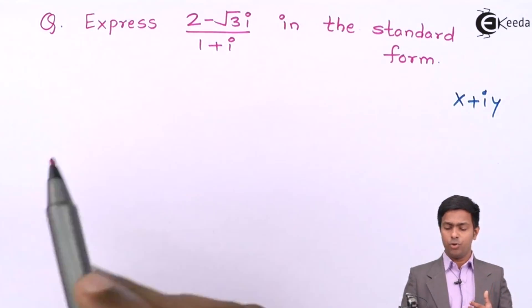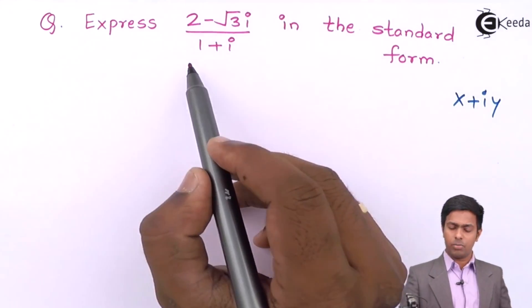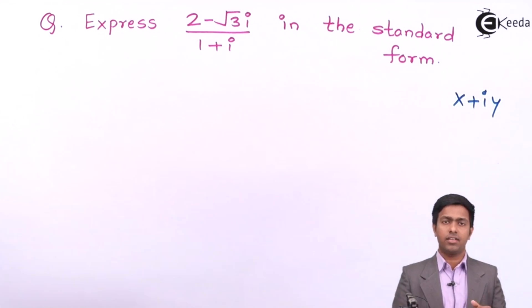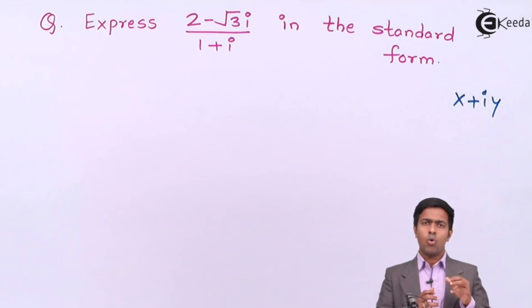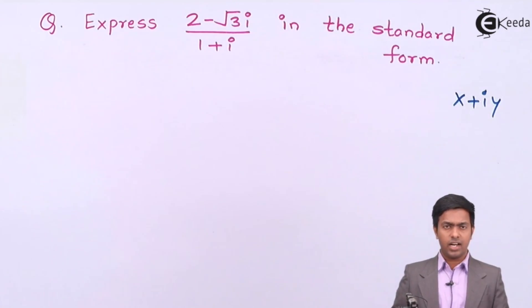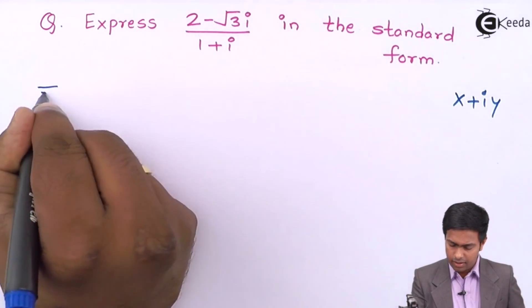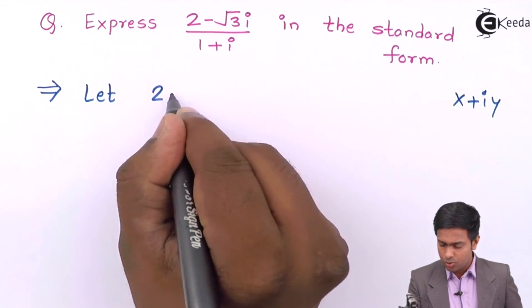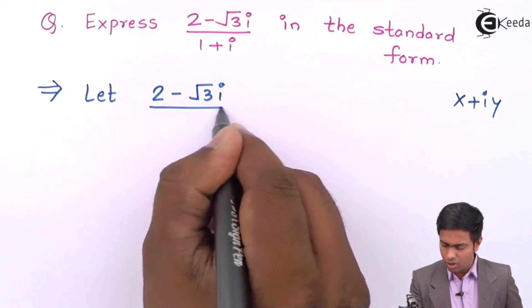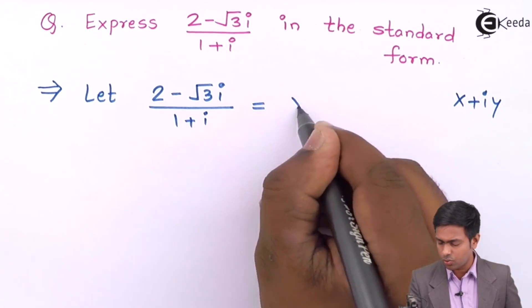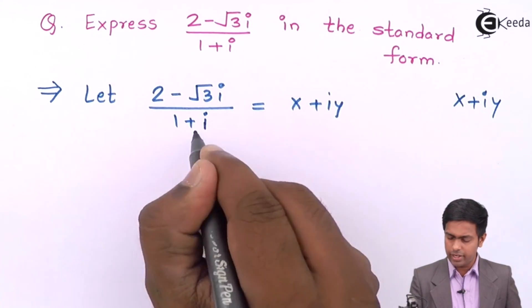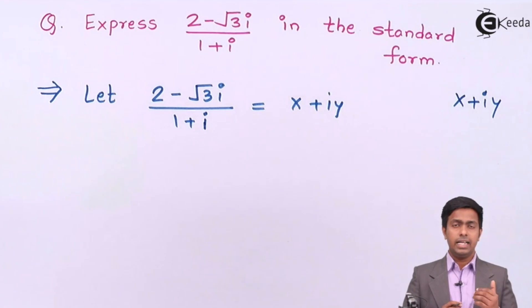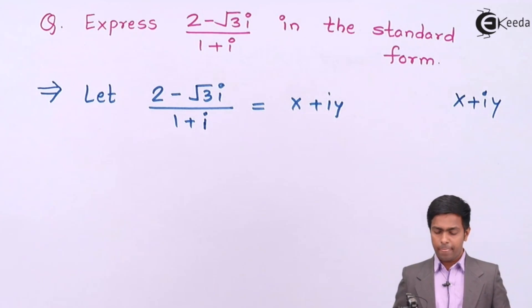In our question there are two real parts — one in the numerator and one in the denominator — and similarly two imaginary parts. We have to convert this into one real and one imaginary part. So let's say (2 - √3·i) / (1 + i) equals x + iy, equating this number with the standard form.